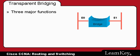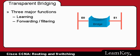Transparent bridging has three major functions. It learns where MAC addresses are located relative to the physical segments they're attached to. It forwards and filters frames intelligently to avoid loops, which can create things such as broadcast storms.